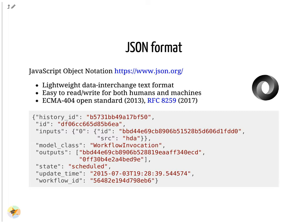Request payloads passed to Galaxy and data returned by the API are encoded in the JSON format. JSON is a standard format used to exchange text data and is supported in all major programming languages. In JSON, strings are enclosed by double quotes, dictionaries by curly braces, and arrays by square brackets. Dictionaries and arrays can be nested at will, as shown in the example.